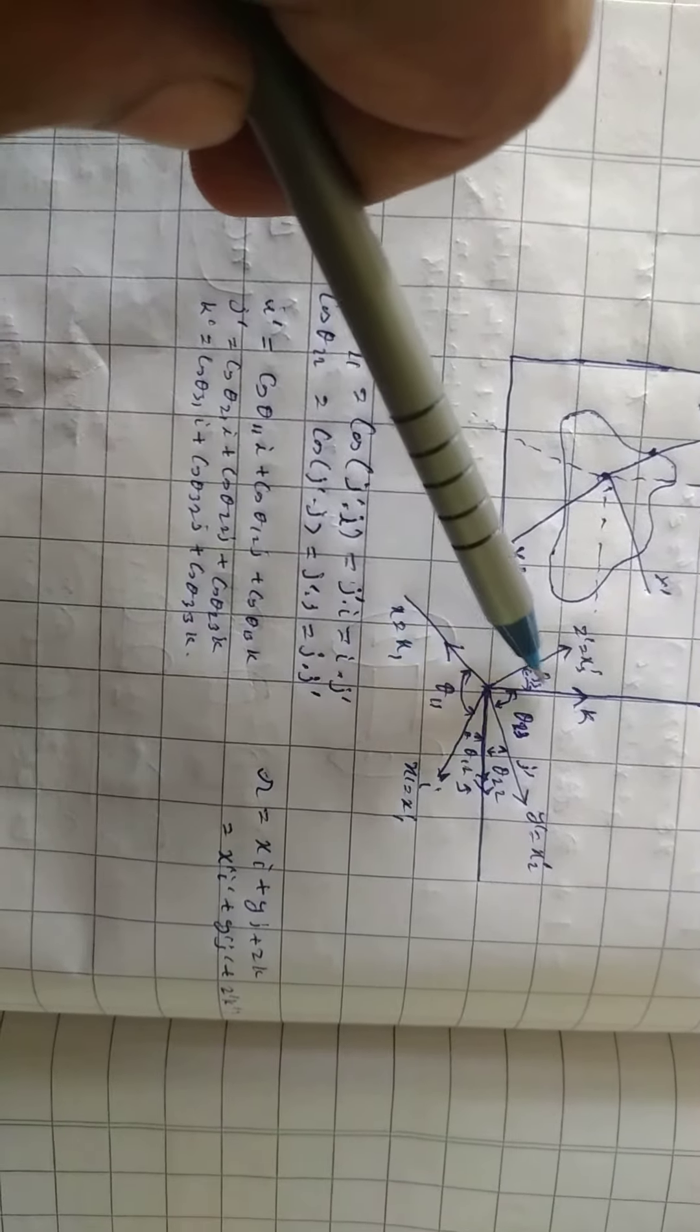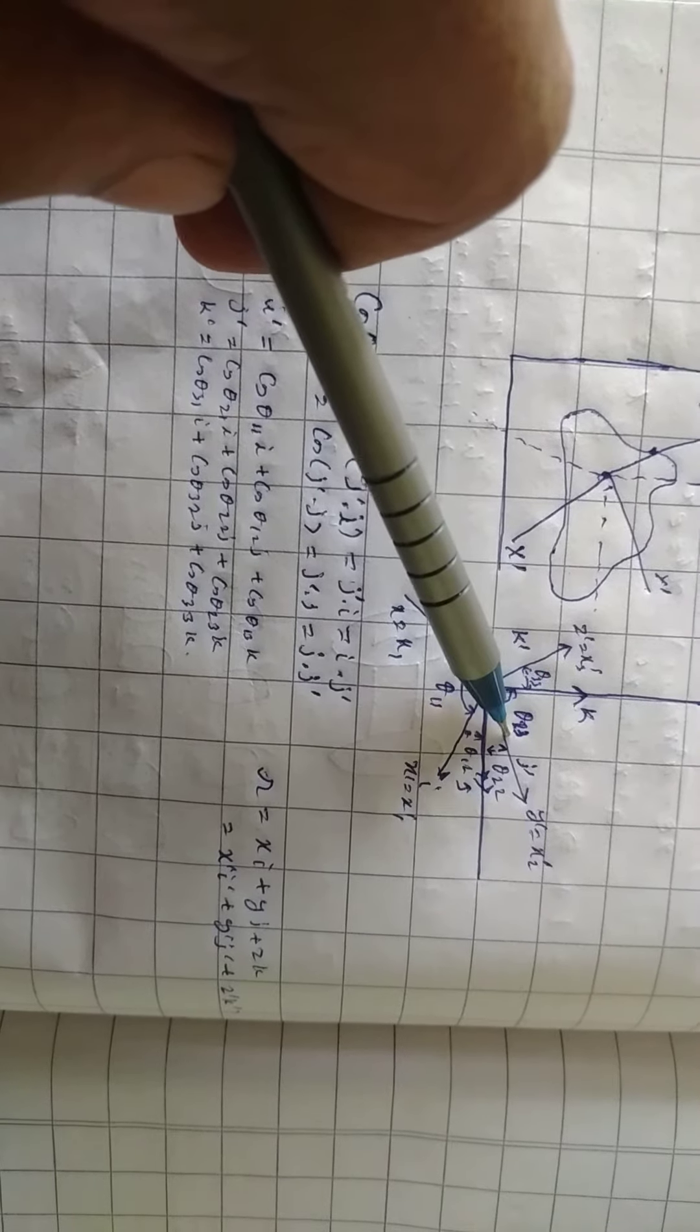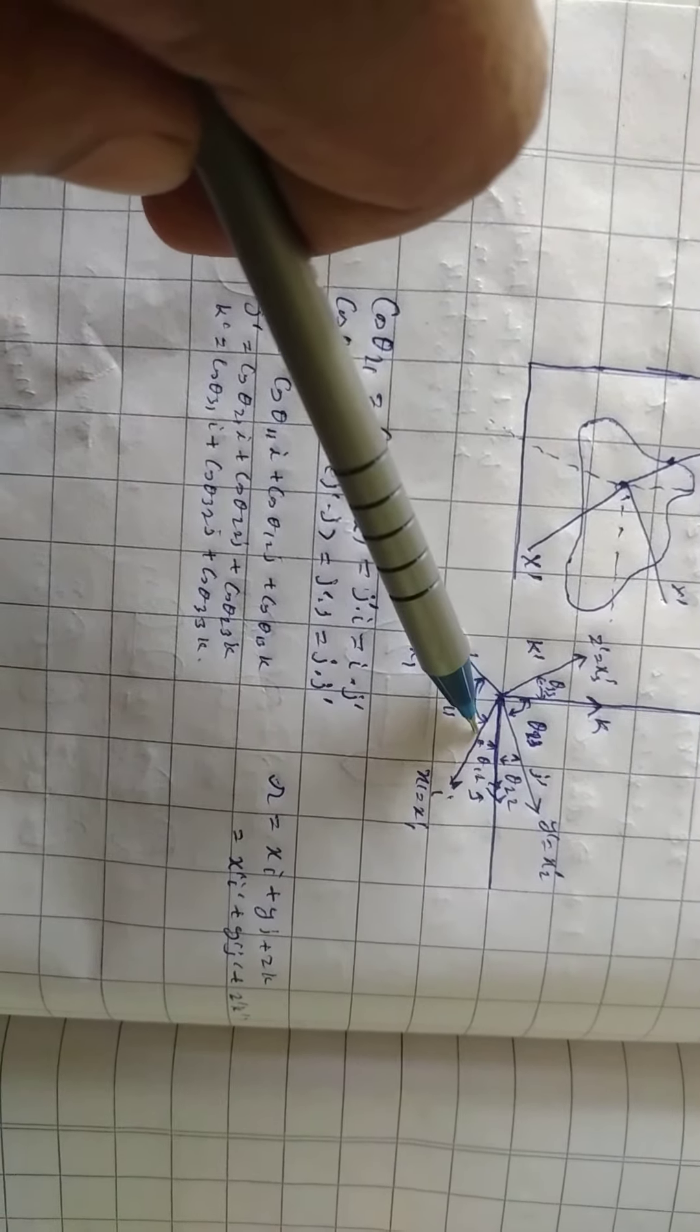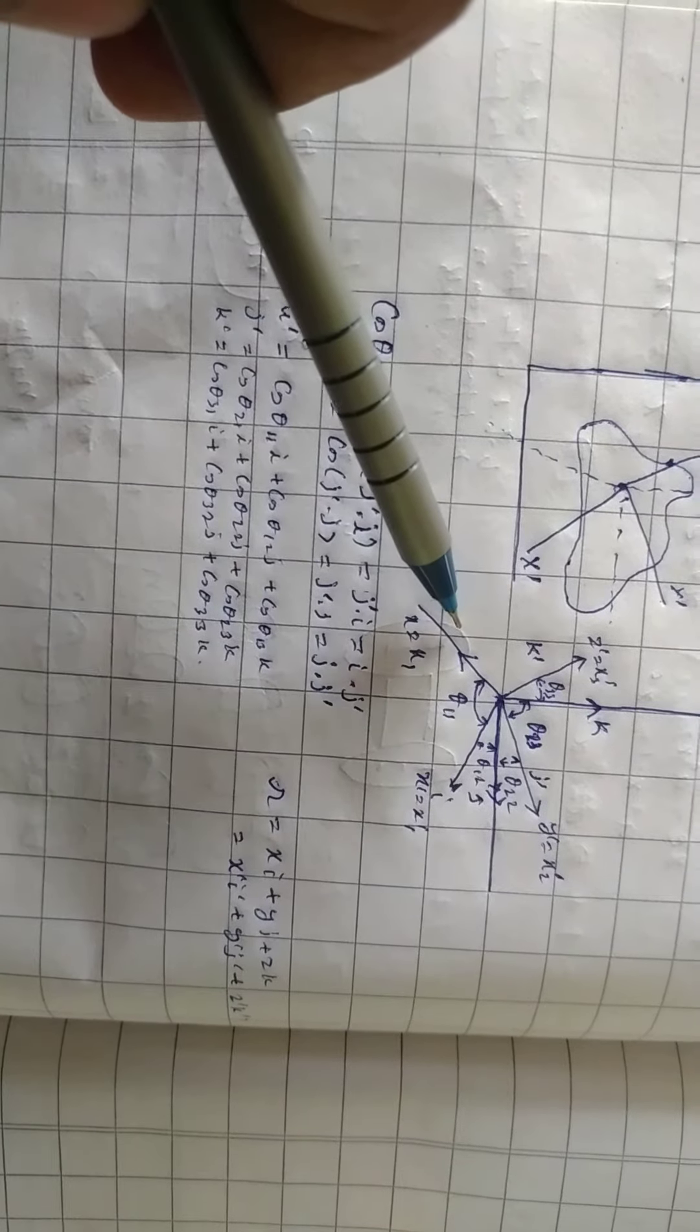This is k, this is j dash, this is k dash, this is j, this is i.